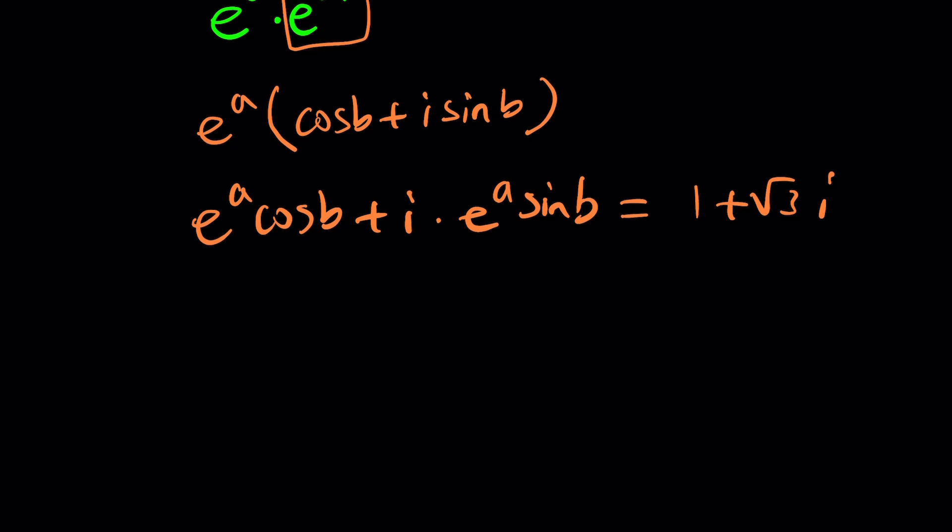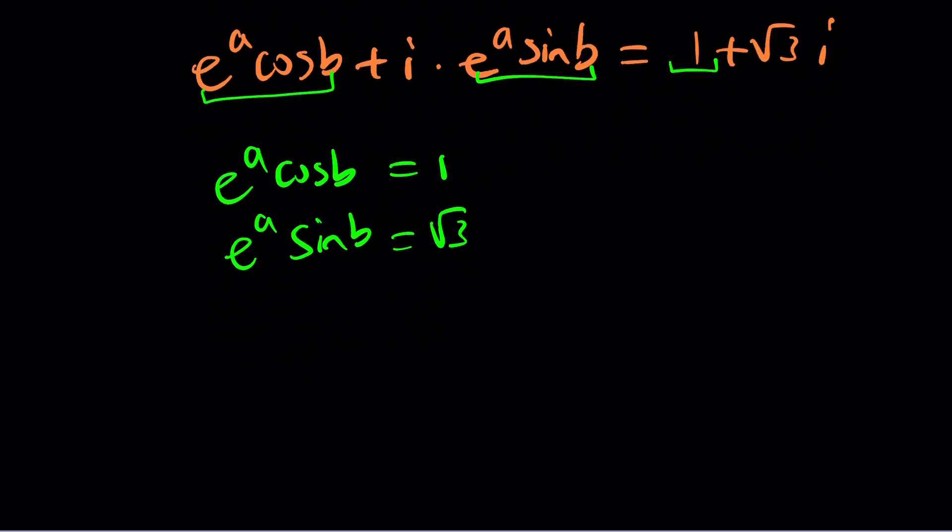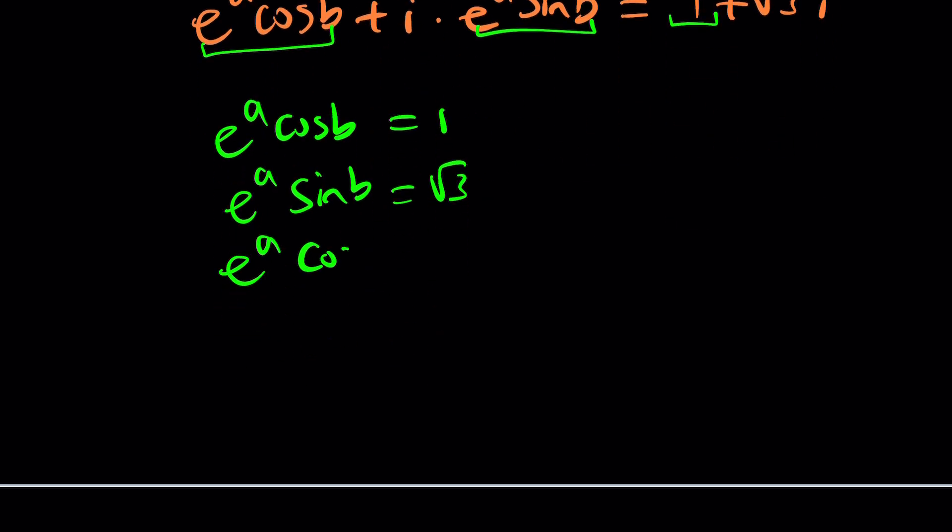How? Now, this can equal this, which means e to the a cosine b is 1, and e to the a sine b is equal to root 3. Now, I should probably write this first because I'm going to divide. All right, now, here's what we're going to do. We're going to divide these expressions because e to the a cancels out, and we end up with tangent b equals square root of 3.